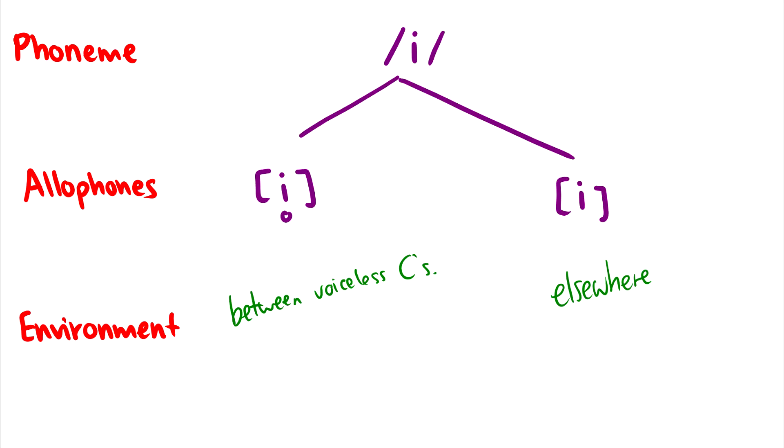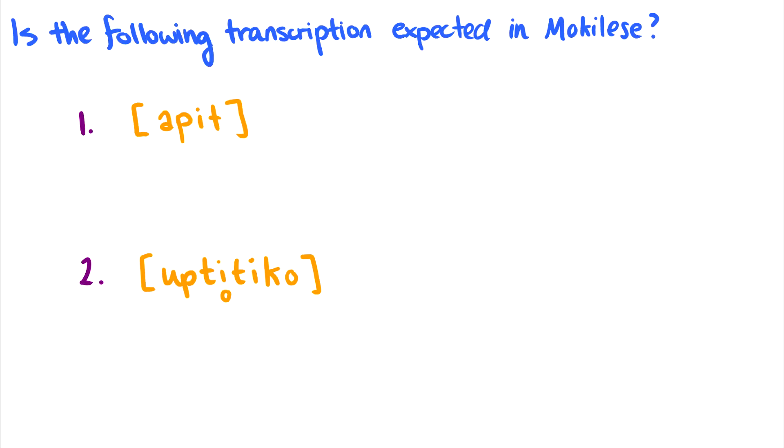In fact, let's take this one step further. Now that we've done this analysis of Mokilese and this one specific vowel, I can now give you some transcriptions of words, and I can ask you, is this an appropriate Mokilese word? Would someone who speaks Mokilese natively pronounce this or expect this? So we can ask ourselves, is the following transcription expected in Mokilese? The first one is [apit]. And given the analysis we just did, we would say, no, this isn't good. Why isn't this good? Because this [i] is between [p] and [t], which are both voiceless sounds. So, no, this is bad. It should be [api̥t], where this [i] is voiceless.